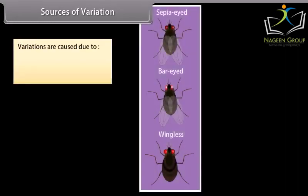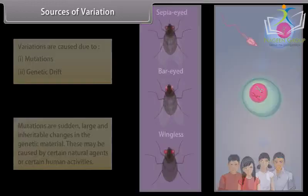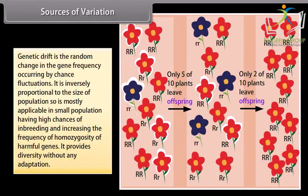Sources of variation include mutations and genetic drift. Mutations are sudden, large and inheritable changes in the genetic material, which may be caused by certain natural agents or human activities. Genetic drift is the random change in gene frequency occurring by chance fluctuations. It is inversely proportional to the size of the population, mostly applicable in small populations with high chances of inbreeding, increasing the frequency of homozygosity of harmful genes, and provides diversity without any adaptation.